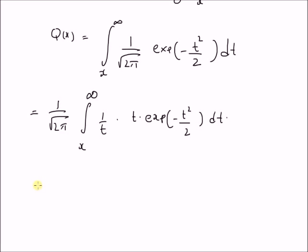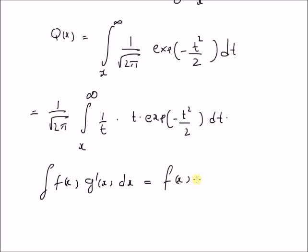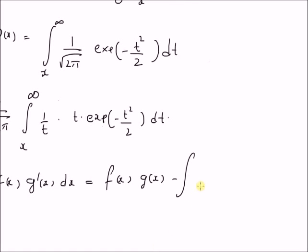Now, recalling the formula for integration by parts, we have: the integral of f(x) multiplied by g'(x) equals f(x) times g(x) minus the integral of f'(x) times g(x) dx, where g'(x) is the derivative of g(x).